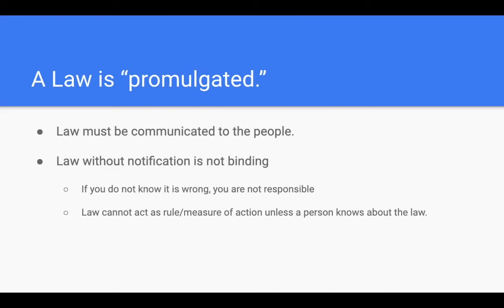Finally, the law is promulgated. What does this mean? It simply means that people know about it — it's communicated. When our legislature in the United States creates a law, that's all well and good, and it's enforced by the executive branch and interpreted by the judicial branch. But we have to know about it. We have to understand that the law exists. And if we don't know that a law exists, how can we be held responsible when we break it? This gets at a practical application of one of the criteria for mortal sin.